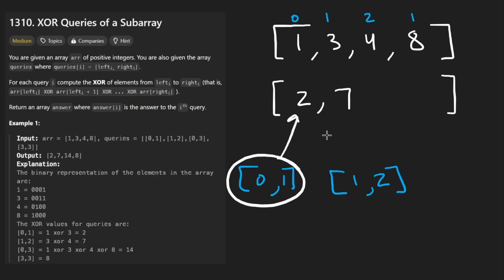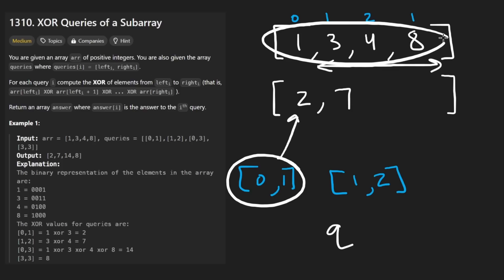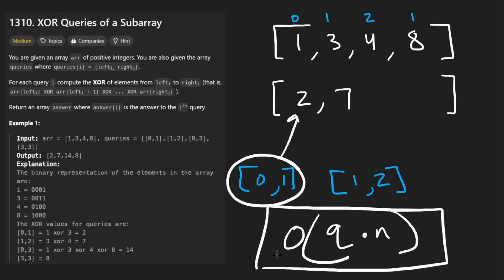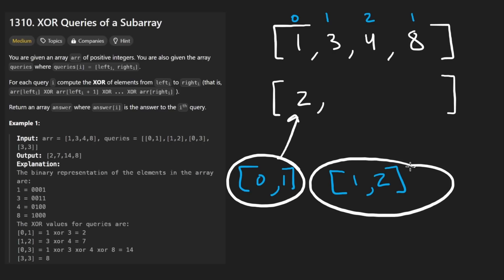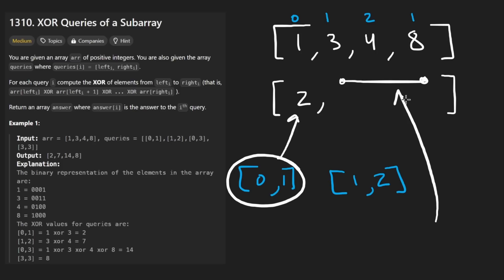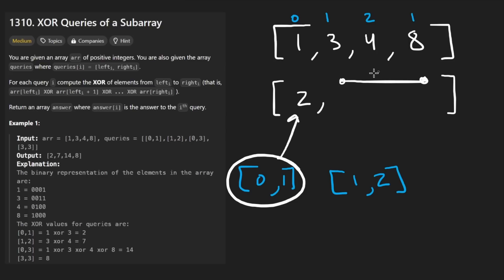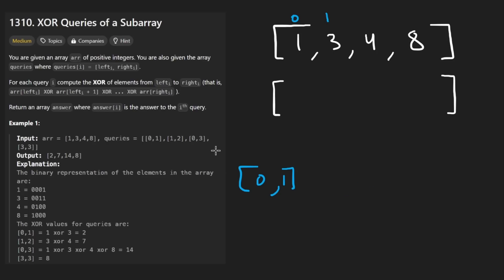That's the problem. The brute force is going through every single query — say we have Q queries, and each query involves going through the entire array of size N. The worst case time complexity is O(Q * N). You might think of queries as intervals, sort them, and process without repeated work, but that approach won't improve the time complexity over the brute force.